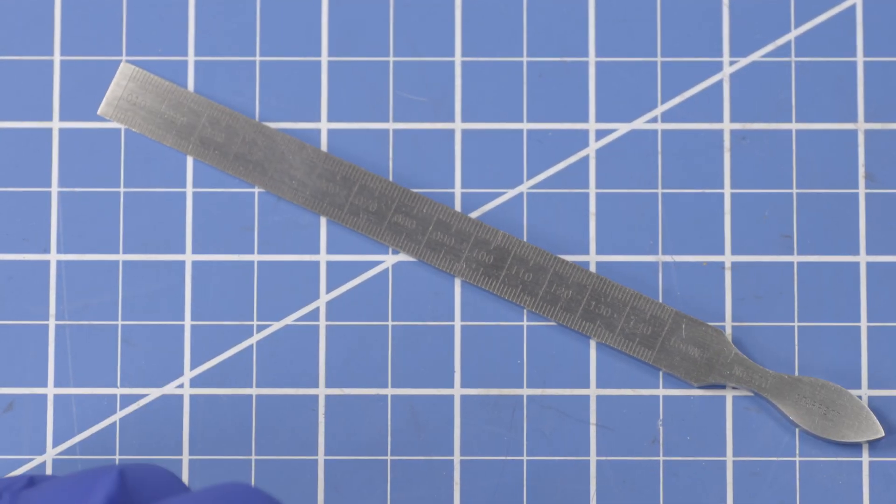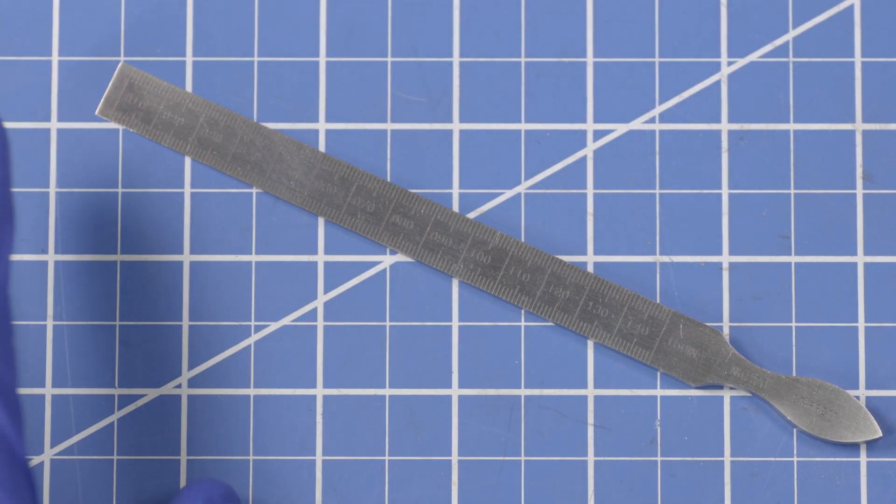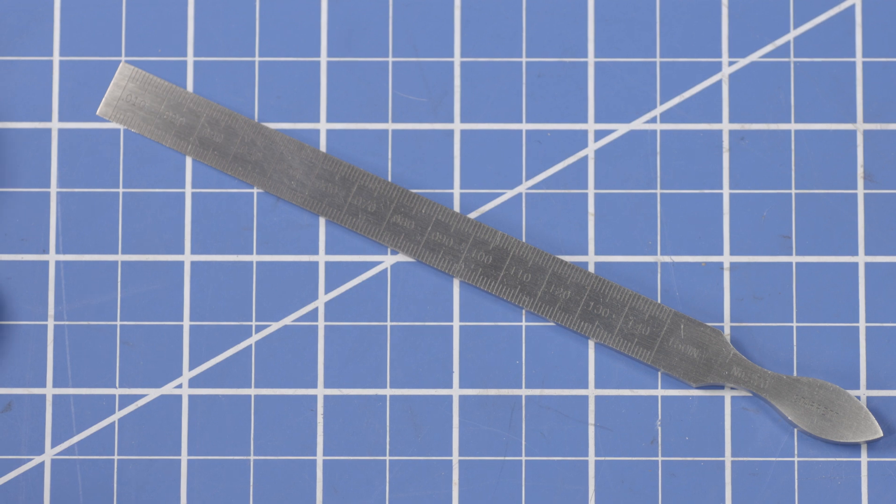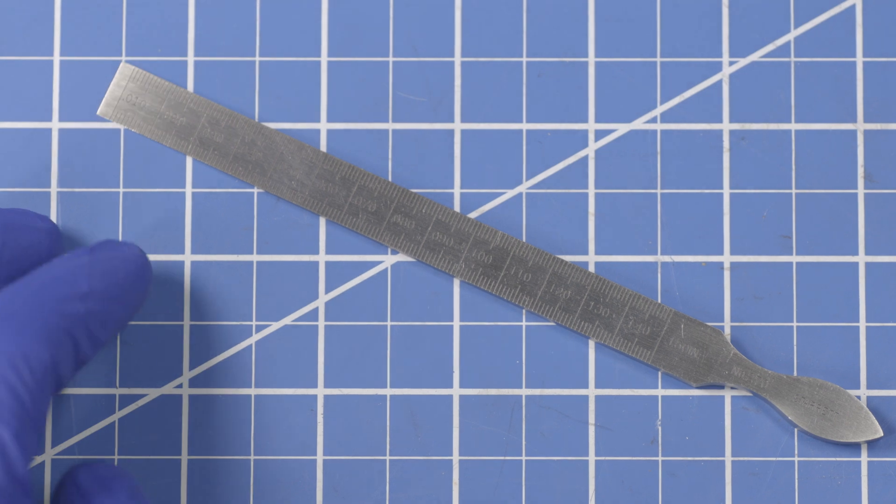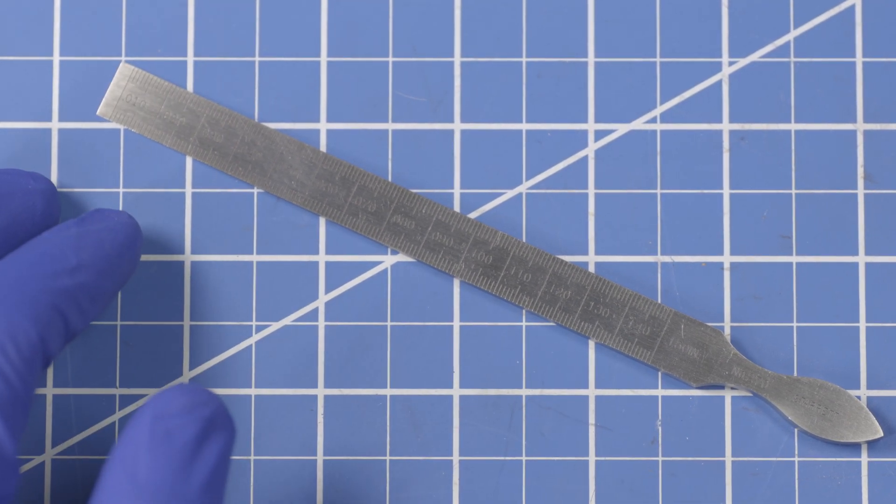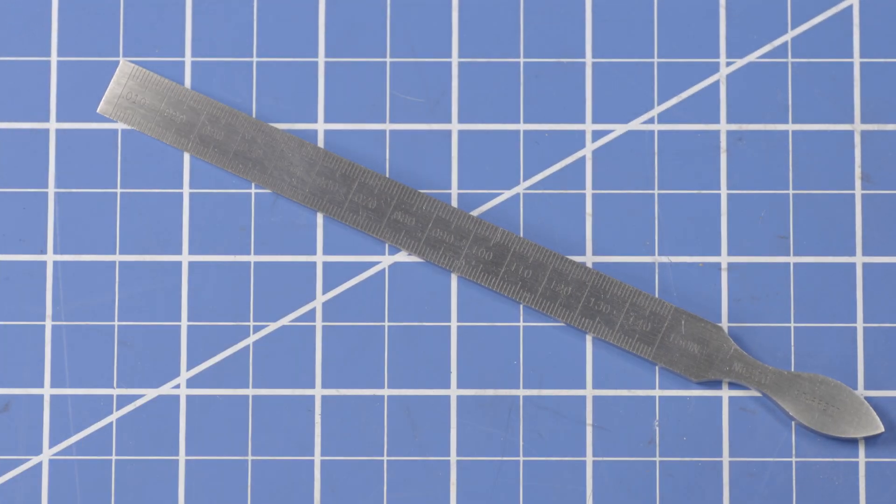All right. So we're going to take this out into the shop and I'll show you how I decided to use this to confirm some settings on my jointer. And I could use it to adjust the jointer. But this video isn't about me adjusting a jointer. This video is about me using this to measure something, which I'll show you how that works.